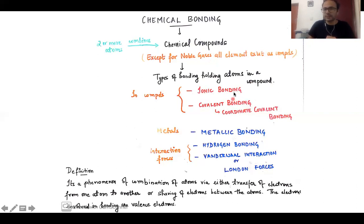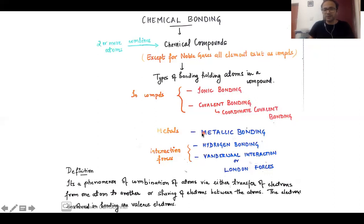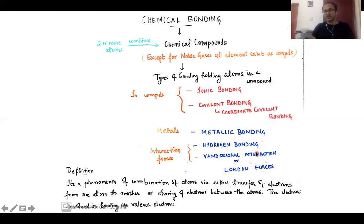Both ionic and covalent bonding are familiar to you. A subtype of covalent bonding is called coordinate covalent bonding. Apart from these, you might have heard about metallic bonding, hydrogen bonding, and other types of interactions like van der Waal interactions, also called London forces.